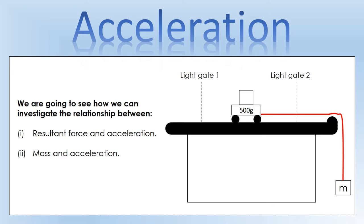We're going to have two light gates set up on a desk about a meter or so apart. We're going to have a track along here and a trolley that can run along the track, and we're going to measure its speed at different points. It's going to have different speeds because we've got a weight force from a hanging mass which is going to act to accelerate it.